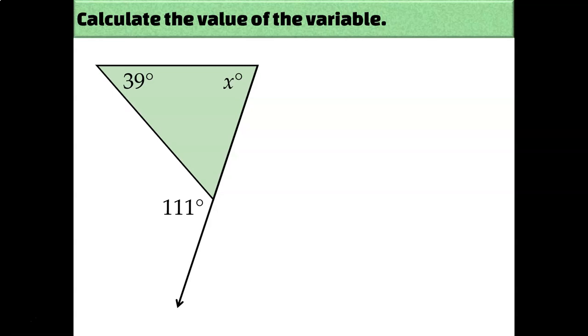Be careful though, you're not always just going to add the two numbers on the screen together. You add the two non-adjacent angles together and set that equal to the exterior angle. The exterior angle here measures 111 degrees, and the two non-adjacent interior angles are 39 and X. So the equation I'll write according to the exterior angles theorem is 111 equals 39 plus X, and that means that X must be 72 degrees.